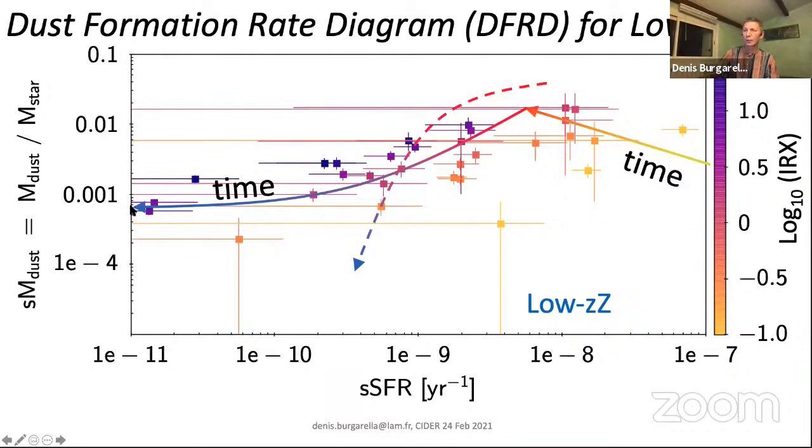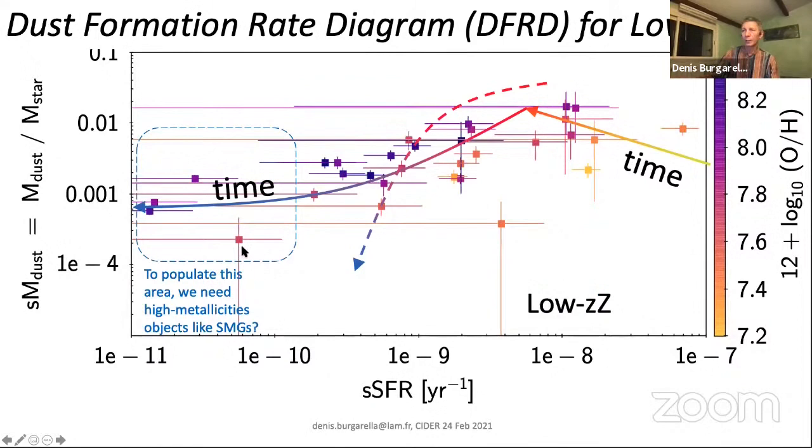We use a sample of low metallicity, low redshift galaxies, a dwarf galaxy sample. As you can see, this is the trend for the high-redshift galaxies—it extends to lower specific star formation rate. If we want to explain why, we need to use metallicity, that's the main parameter. To populate this area, I remind you that LBGs are down this arrow, we need larger metallicity objects, maybe submillimeter galaxies. That's something we need to check.